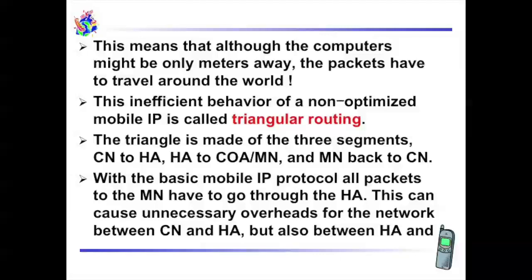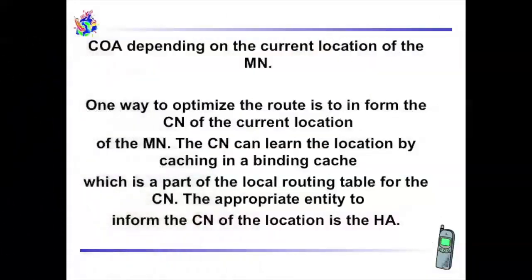With the basic mobile IP protocol, all packets to the MN have to go through the HA. This can cause unnecessary overhead for the network between CN and HA, but also between HA and CoA, depending on the current location of the MN.